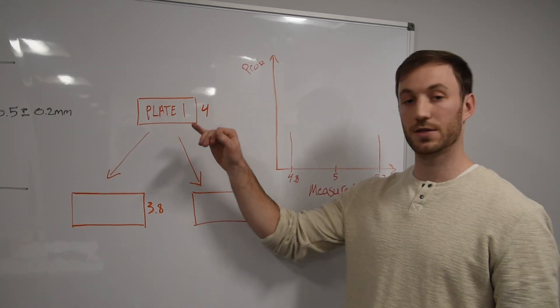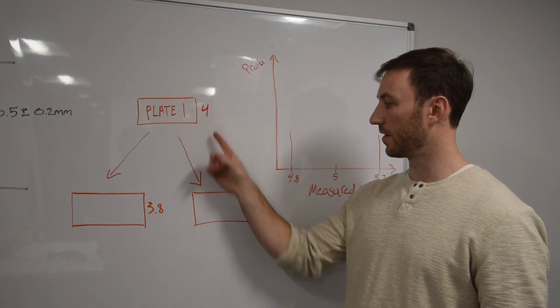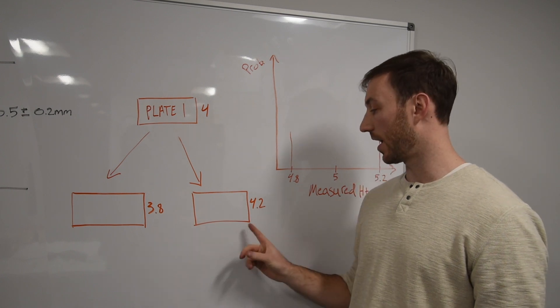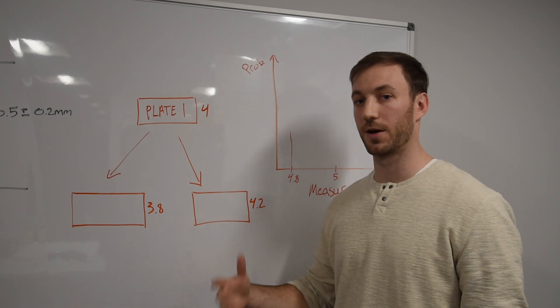In this scenario, we have plus or minus 0.2 millimeters. So what that means is that this plate could be on the lower side, 3.8 millimeters, and on the higher side, 4.2 millimeters, and then any plates in between are acceptable.